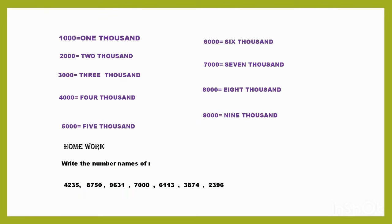Now this is 1000 — you can see 4 digits. 2,000; 3,000; 4,000; 5,000; 6,000; 7,000; 8,000; and 9,000.